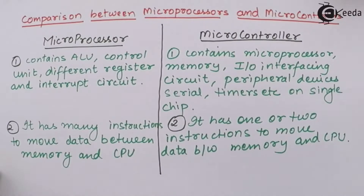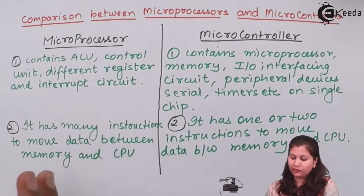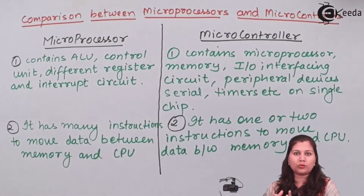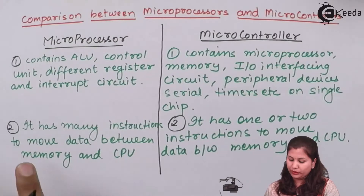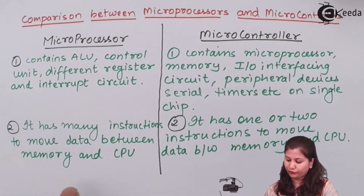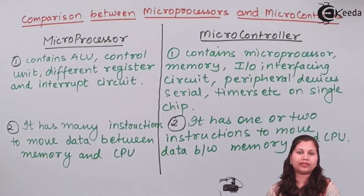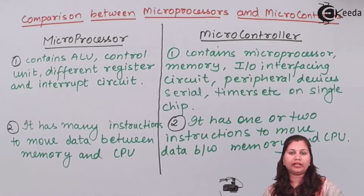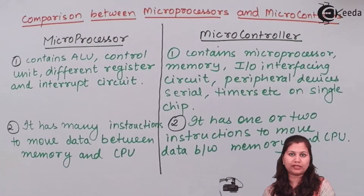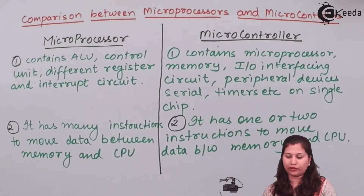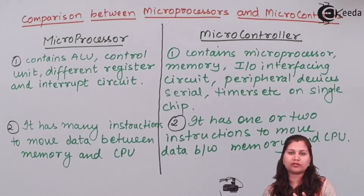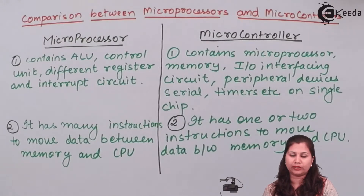The second difference is about instructions. In microprocessors, because memory is outside the chip, there are many instructions to move data between the memory and the central processing unit. But in a microcontroller, there is only one or two instructions for moving data between the memory and the central processing unit.